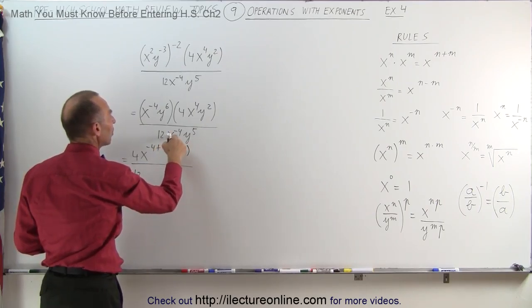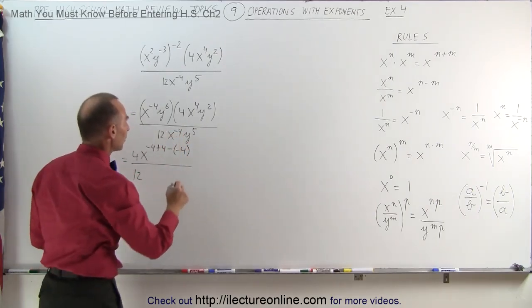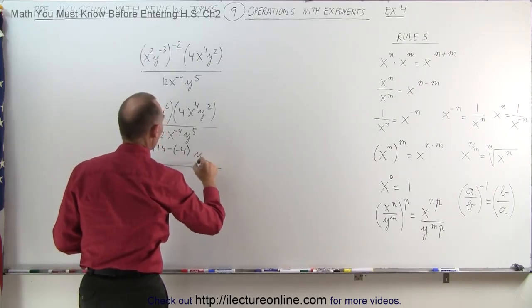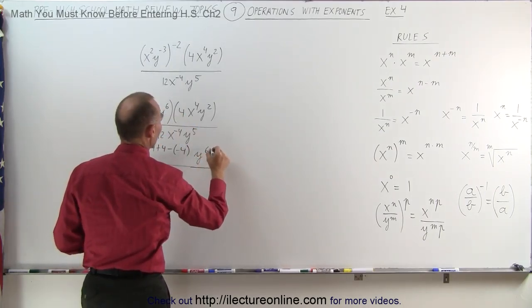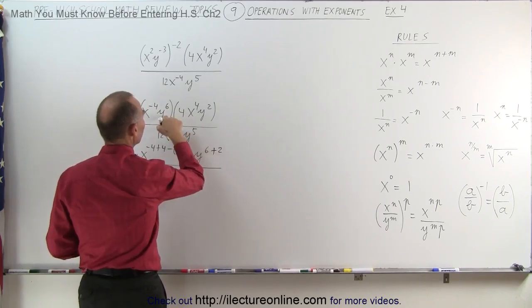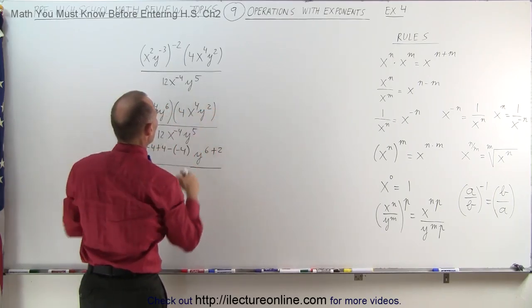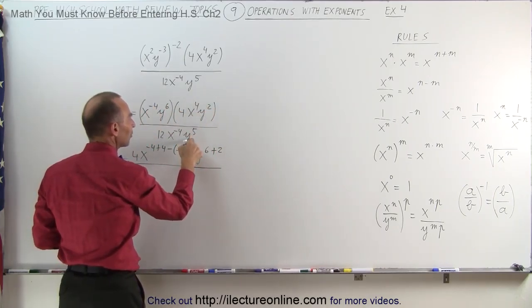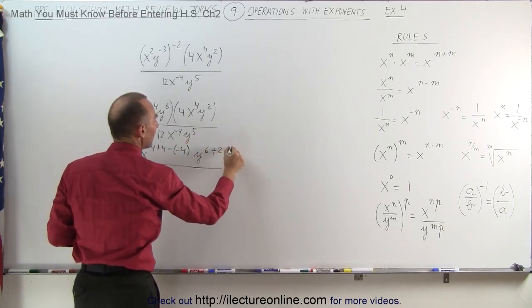I have to subtract the exponent because it's in the denominator. Then we do the same with the y. This becomes y⁶⁺²⁻⁵ because when we multiply and the bases are the same, we add exponents. But here we have to subtract the exponent because it's in the denominator.